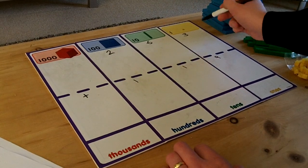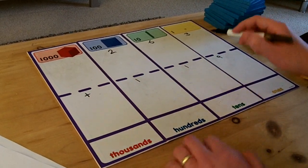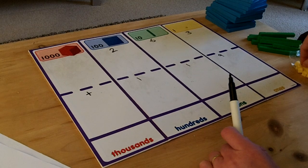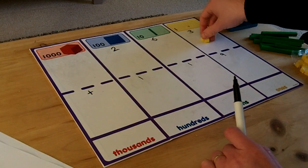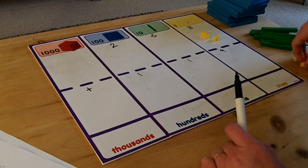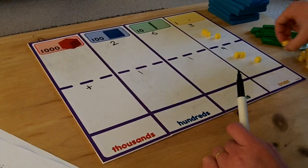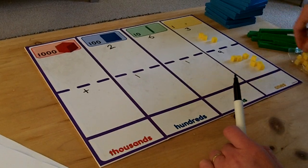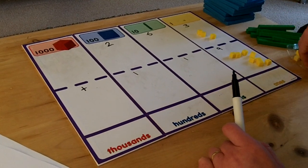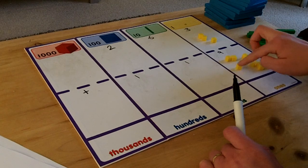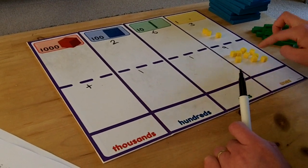So in the ones column I have got 3 and 9. This means I must put 3 blocks on top of the 3 and 9 blocks on top of the 9. 1, 2, 3, 4, 5, 6, 7, 8, 9.